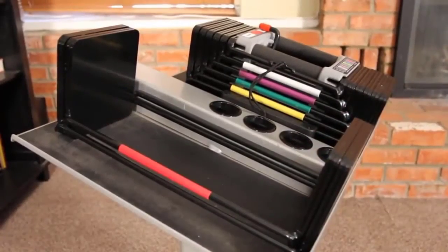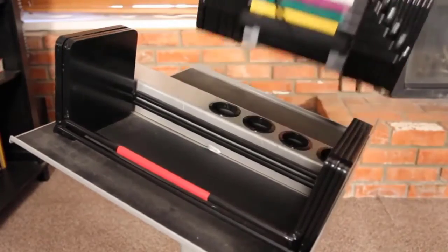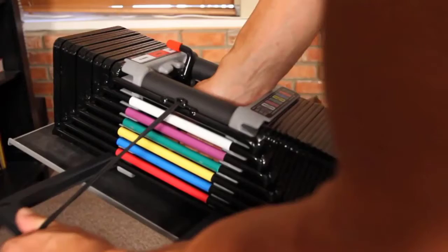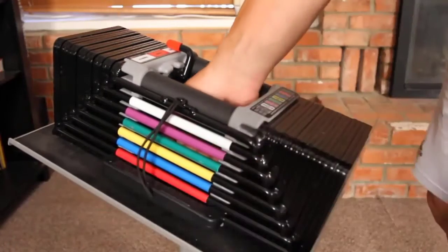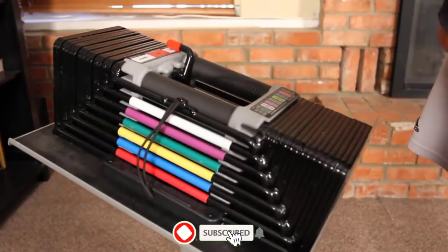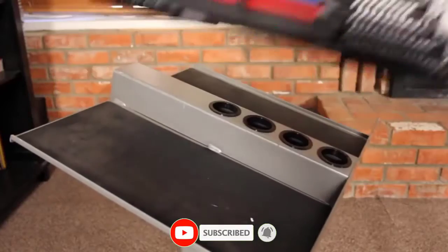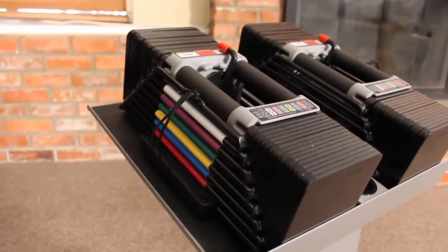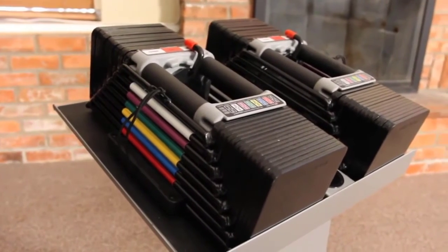The Elite 70 set can then be further expanded to 90 pounds per hand with the Stage 2 90 kit. To do this, simply put the Elite 70 set inside the Elite Stage 2 90 kit, and you're ready to lift. The Elite 90 set can even be expanded again to 130 pounds per hand.